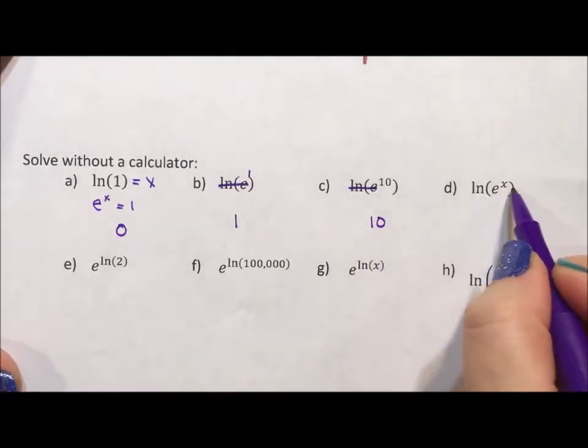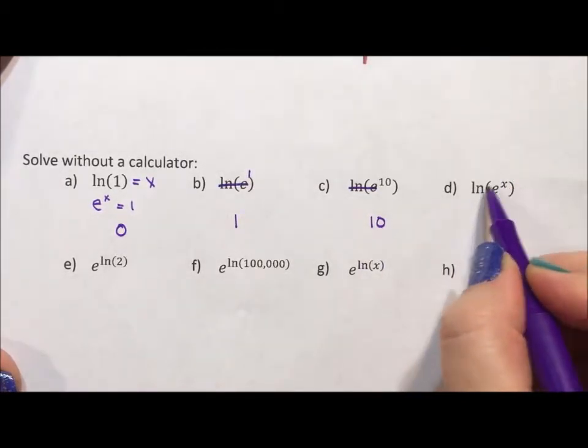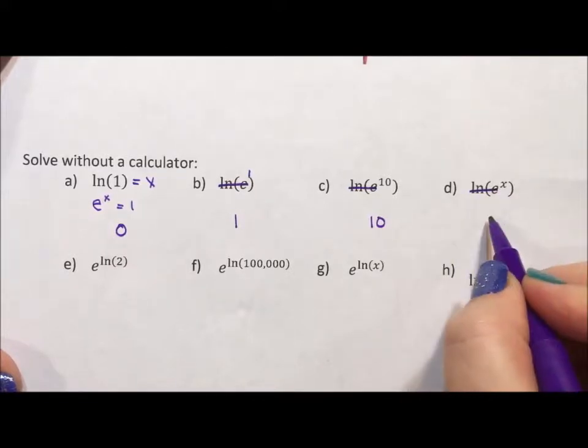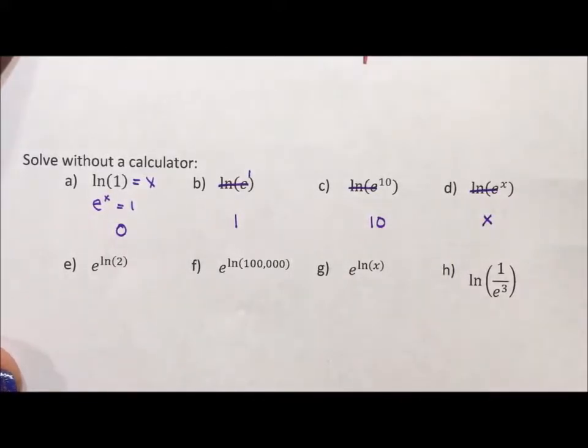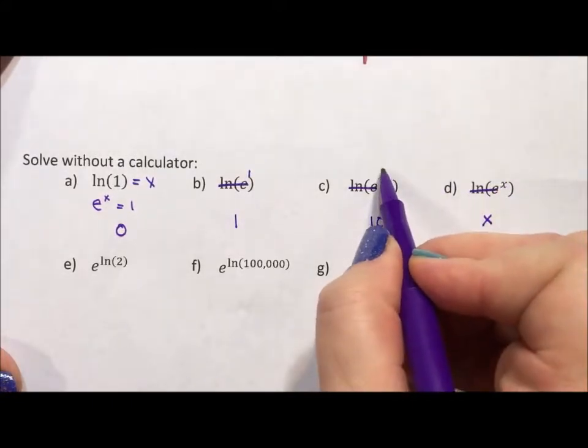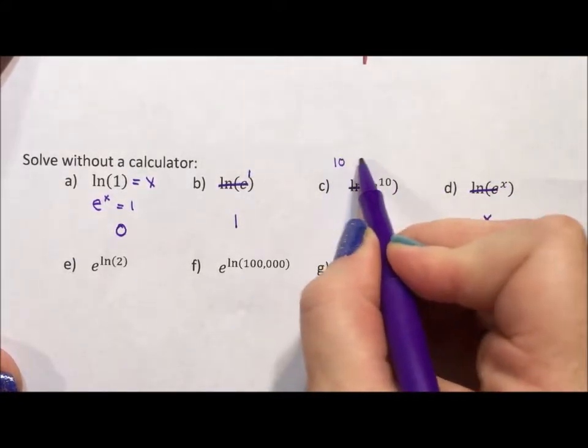Which means, because they're inverses, natural log of e to the x, no matter what your exponent is, they undo each other, and you're left with just the exponent. We could think of this also as the power rule, where the 10 would come out front, or the e.